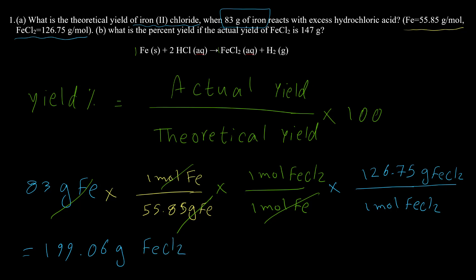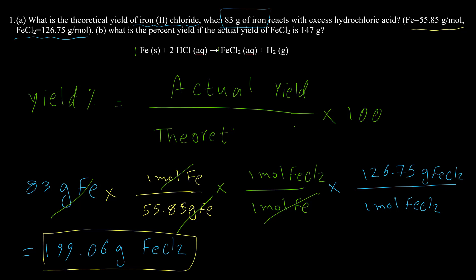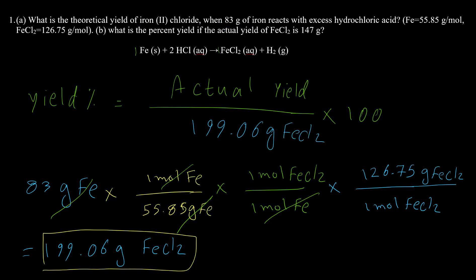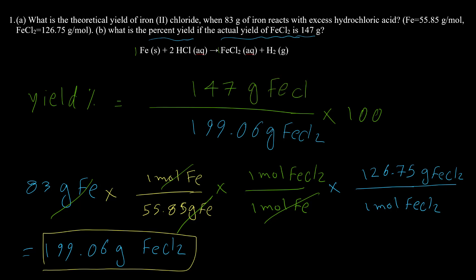This calculated value for the product is the theoretical yield — 199.06 grams of iron chloride. For part b, the question states the actual yield of iron chloride is 147 grams. Plugging into the percent yield formula: 147 over 199.06 times 100 gives a percent yield of 73.8%.